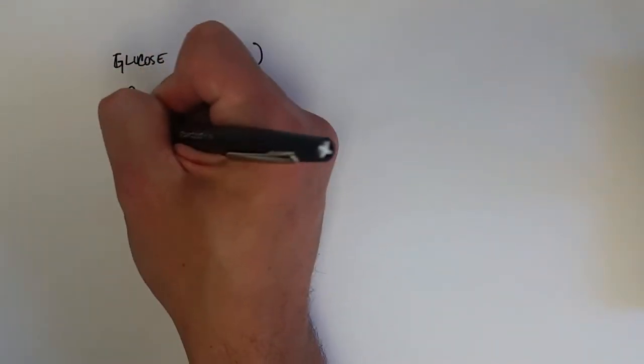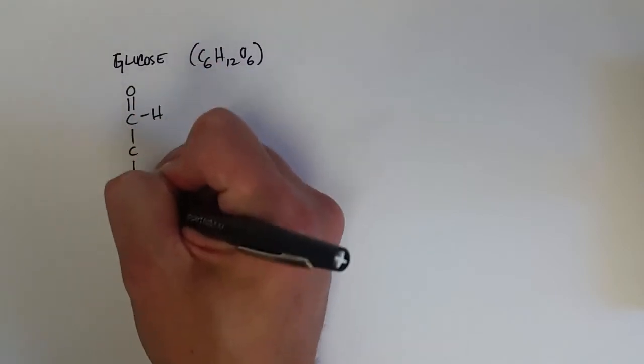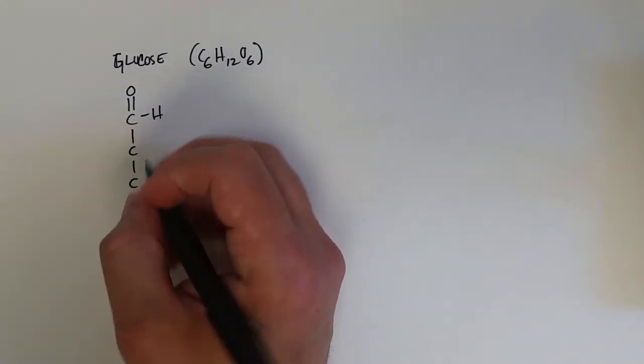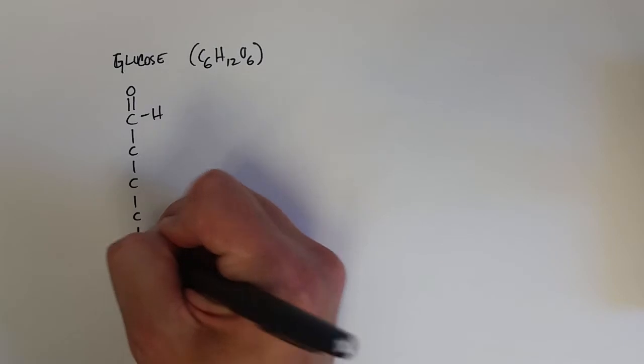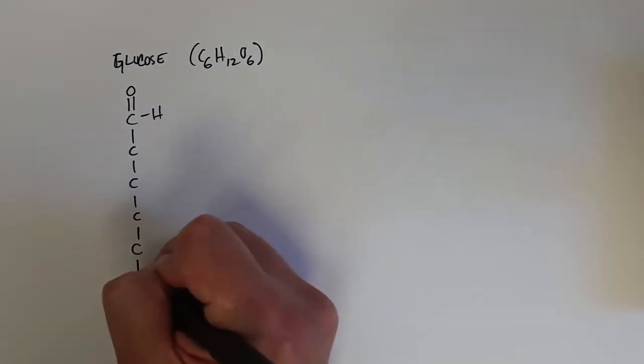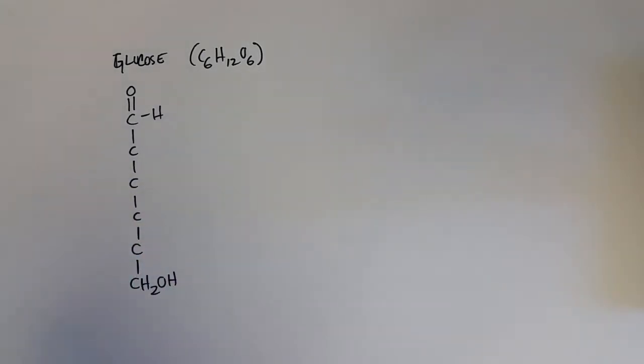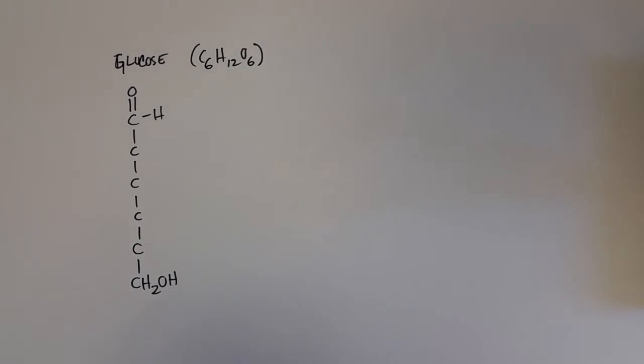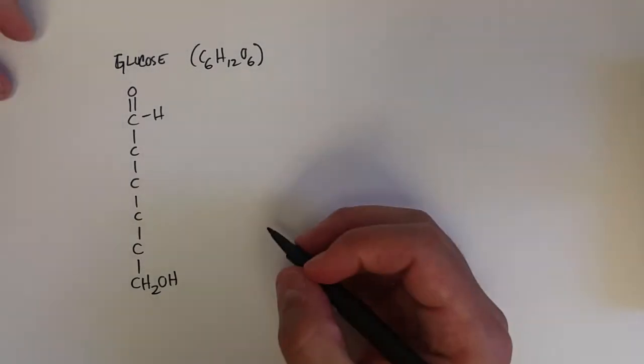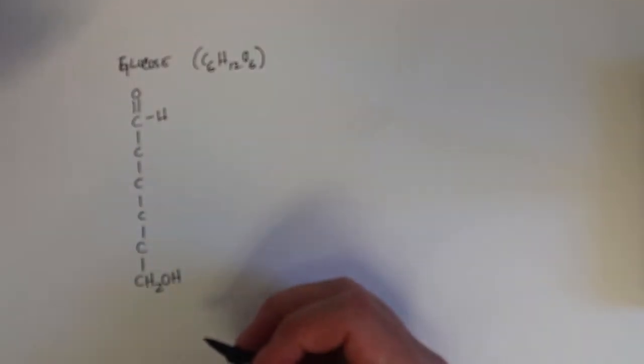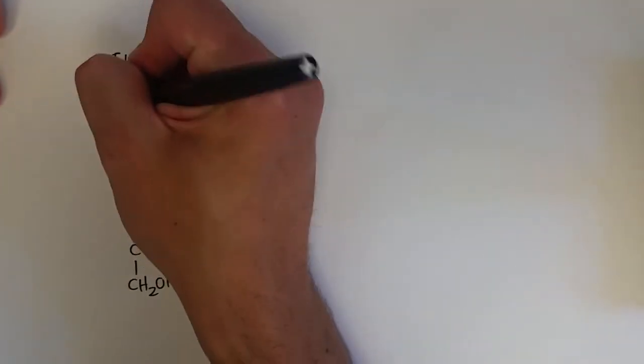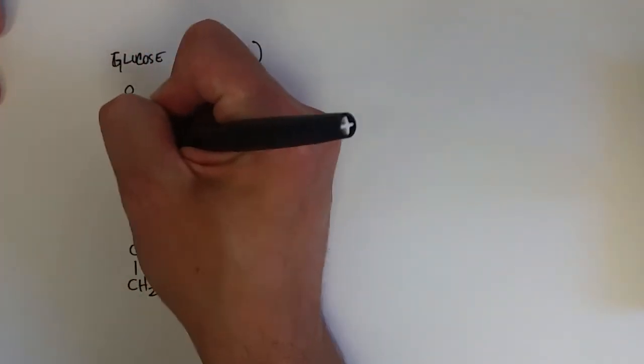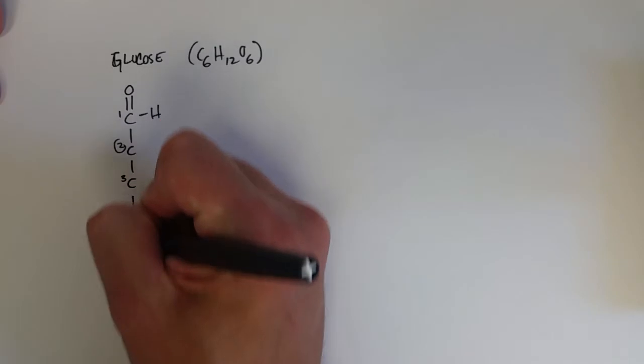...aldehyde up at the top, four carbons in the middle, and the last carbon at the bottom. We normally number these one through six in that fashion, so this would be my first carbon, second carbon, third, fourth...